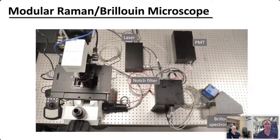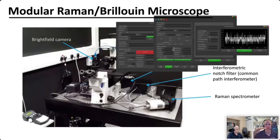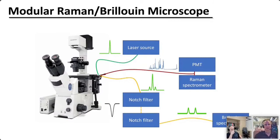A question about depth imaging: how do you obtain Brillouin images from different depths in the sample? The Brillouin microscope, because it couples into a single mode fiber, is a normal confocal microscope. You launch light from a single mode fiber and couple back into a single mode fiber — so it is basically a normal confocal microscope but with a fancy detector.